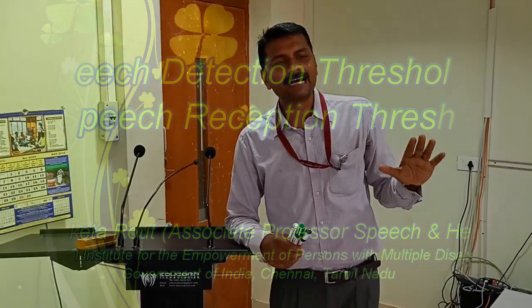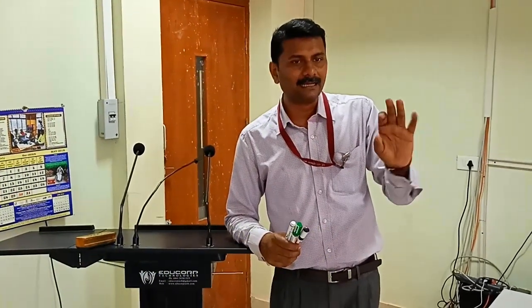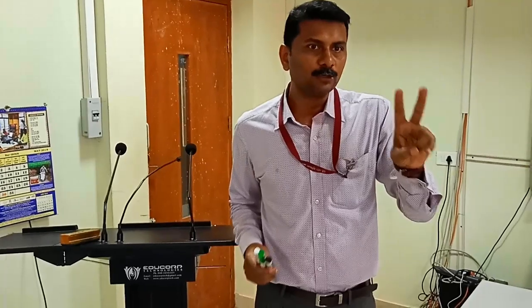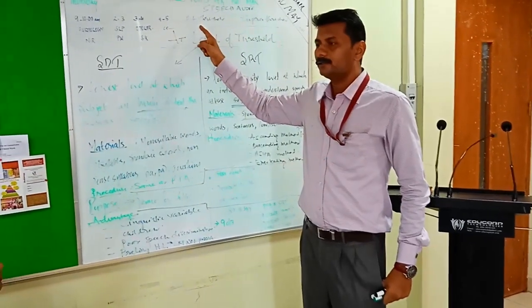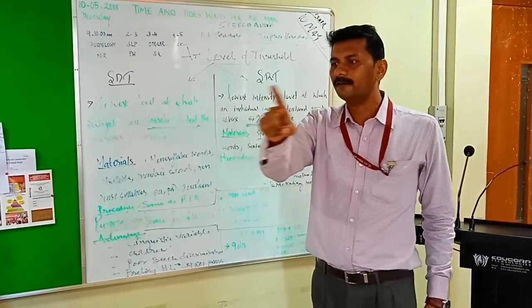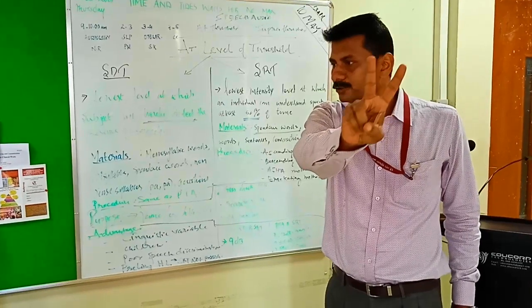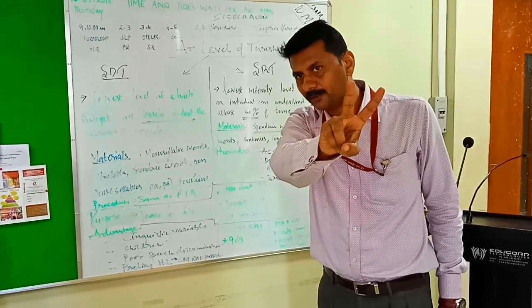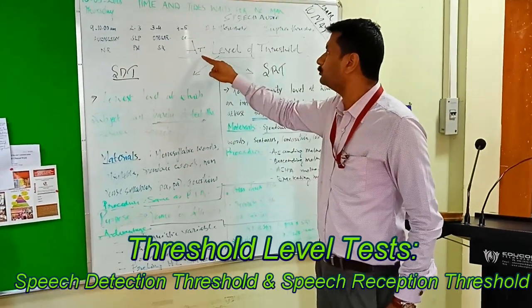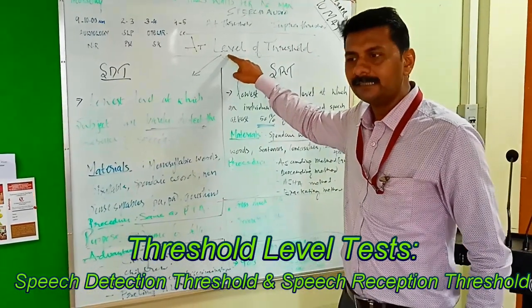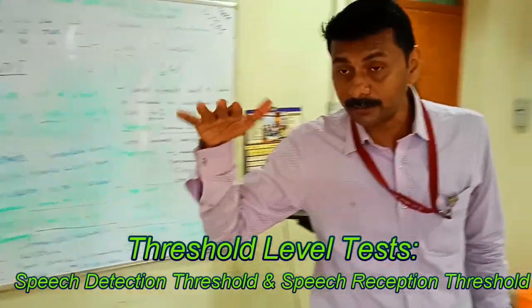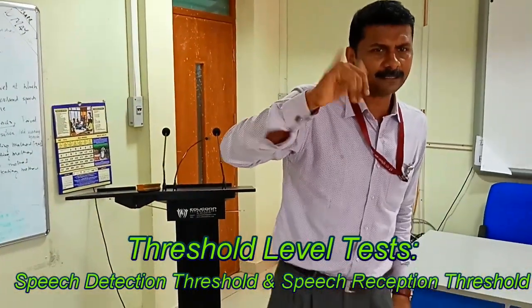In this class we are going to have a detailed look at two tests used in speech audiometry. In speech audiometry we have two primary types of tests: one at the level of threshold and the other is suprathreshold. We are going to learn about the two tests done at the level of threshold. Threshold means just audible — 50% of the time.